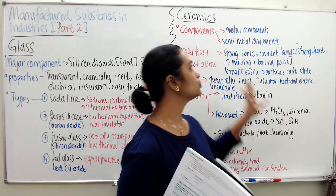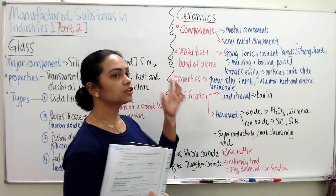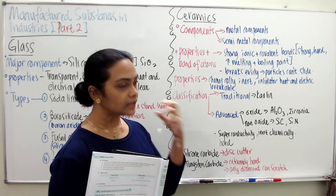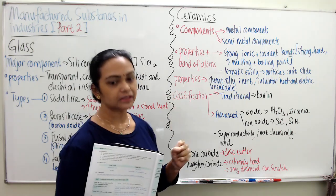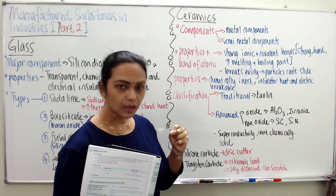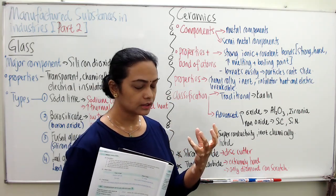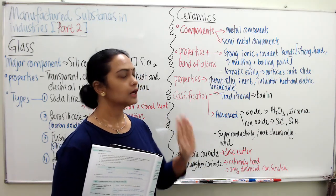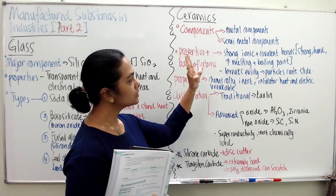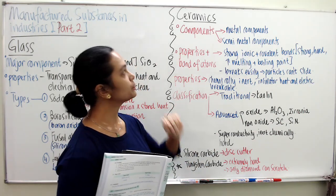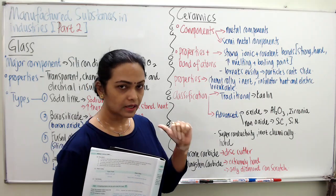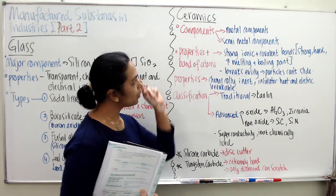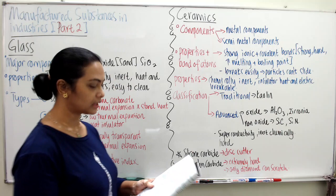Now let's go to ceramics. What is the difference between ceramics and glass? Ceramics are very brittle — they can break very easily, similar to glass. But ceramics are not as transparent as glass; ceramics are not transparent. Now let's go to the components of ceramics.